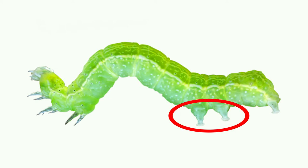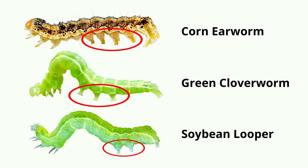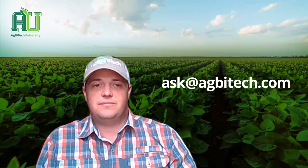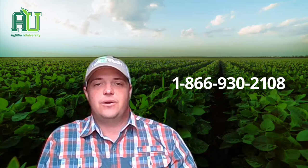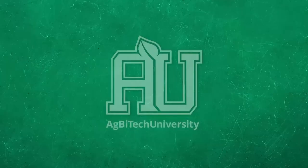From all of us here at AgBiTech, we thank you for watching on how to distinguish between a corn earworm and green clover worm and soybean looper. If you have any questions, send an email to ask@agbiotech.com or call us at 866-930-2108 and we will connect you to the right person. Until next time, have a great day. Learn more at agbiotech.us/university.